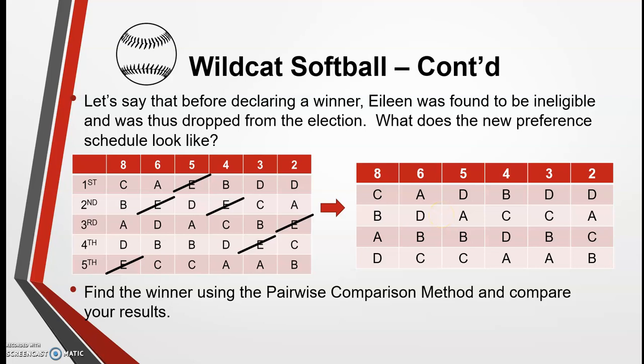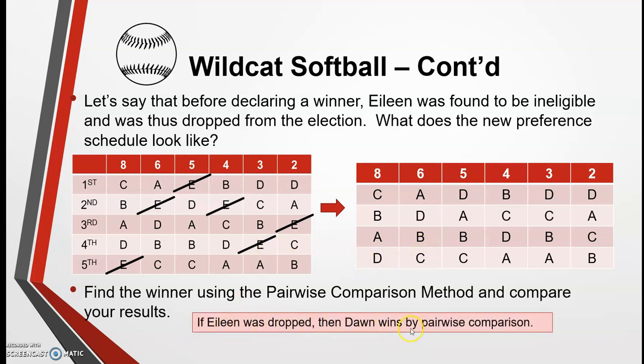Hopefully you've taken a few minutes to calculate the winner yourself. You should have found that since Eileen was dropped, Dawn became the winner of the pairwise comparison. But originally Beth was the winner because she won three comparisons. This raises the question: is it fair that a non-winning candidate dropping out caused the original winner, Beth, to no longer win? Most people would say no — that's not considered fair. The last section of this unit will examine this concept of fairness criteria and how all voting methods violate at least some of them.